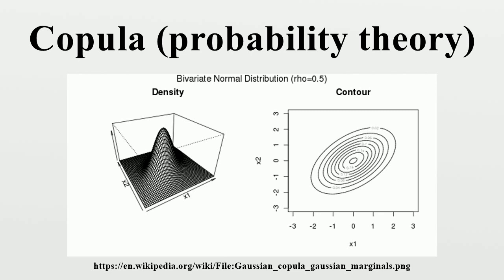Civil engineering: Copula functions have been successfully applied to the database formulation for the reliability analysis of highway bridges and to various multivariate simulation studies in civil, mechanical, and offshore engineering. Researchers are also applying these functions in transportation to understand the interaction of individual driver behavior components, which in totality shape the nature of an entire traffic flow. Reliability engineering: Copulas are being used for reliability analysis of complex systems of machine components with competing failure modes. Warranty data analysis: Copulas are being used for warranty data analysis in which tail dependence is analyzed.